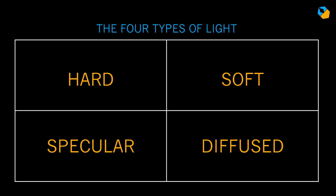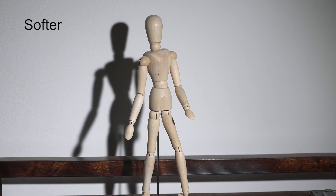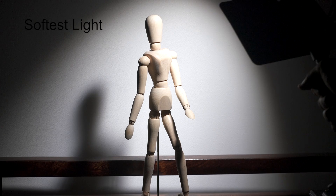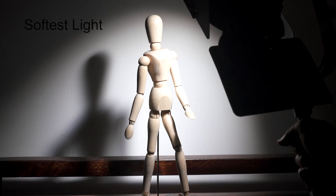Many people confuse diffused light with soft light, but we'll get there in a bit. First, the difference between hard and soft light is pretty simple. The answer does not lie in the light, but in the shadows. When the shadows are sharp and clear-cut, the light is said to be a hard light. When the shadows are blurry, the light is said to be a soft light. The softest light gives you the most blurry shadows, and you can't make out anymore the shape of the object casting the shadow.